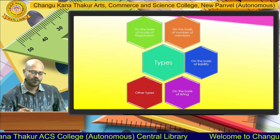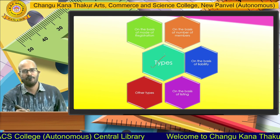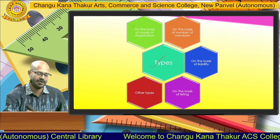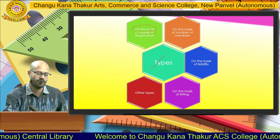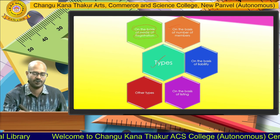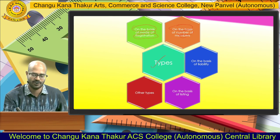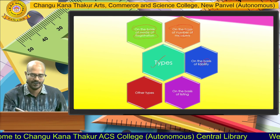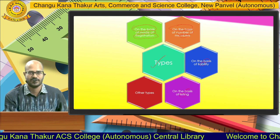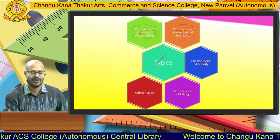Next, we look at the types of a company. There are five main types: first, on the basis of mode of registration; second, on the basis of number of members; third, on the basis of liability; fourth, on the basis of listing of shares under stock exchanges; and fifth, other types.